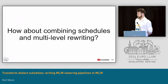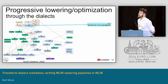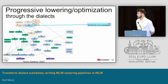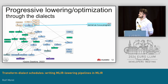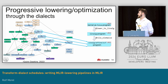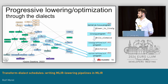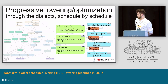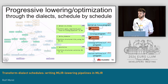What about combining schedules with the multi-level rewriting we typically do with MLIR? Typically with MLIR, we do progressive lowering through dialects. Suppose we start with a TOSA program, then lower that to Linalg, introduce some tiling to optimize it — which brings in lower-level dialects — then get rid of the Linalg dialect through some vectorization, and so on until we reach lower dialects. We can use schedules for each of these lowering and optimization steps.